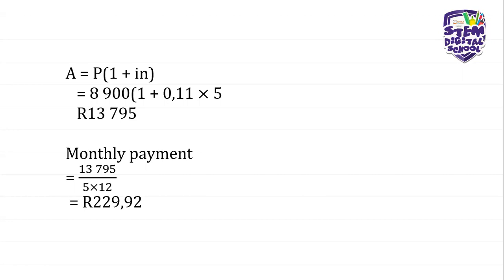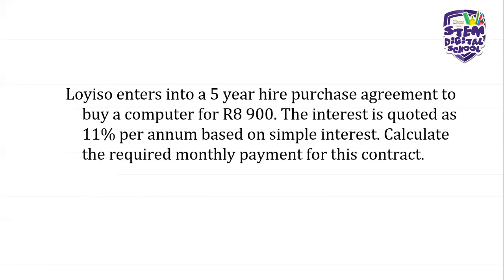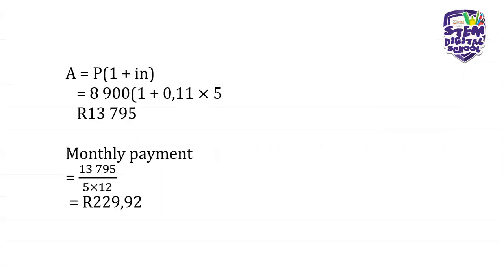So if you buy this computer for 8,900 rands, by the end of five years you shall have paid 13,795 rands in total. Although you'll be paying a smaller monthly amount of 229.92 rands, the total amount will definitely increase after the five-year period due to the interest charged through the hire purchase agreement.